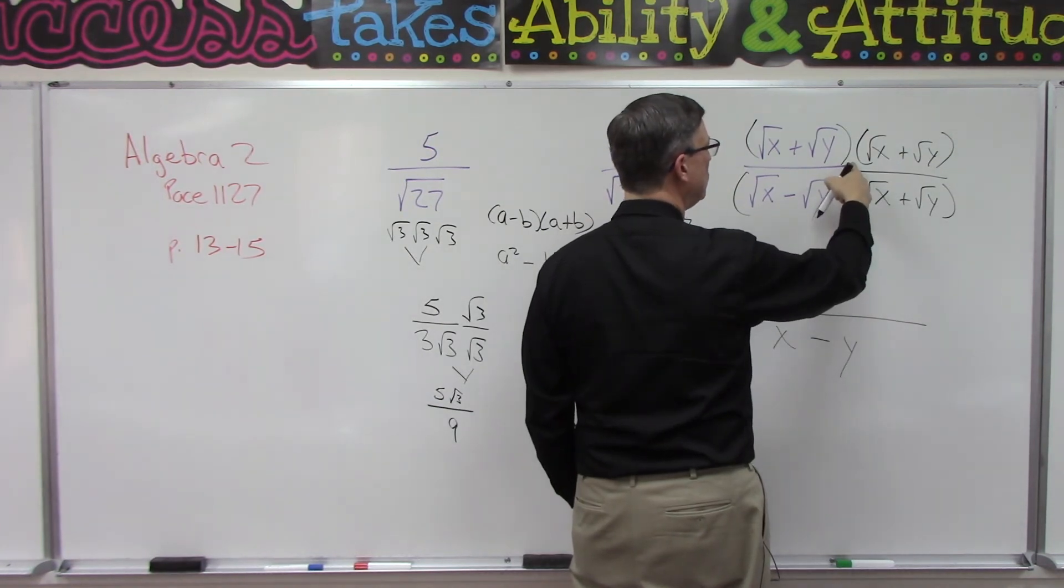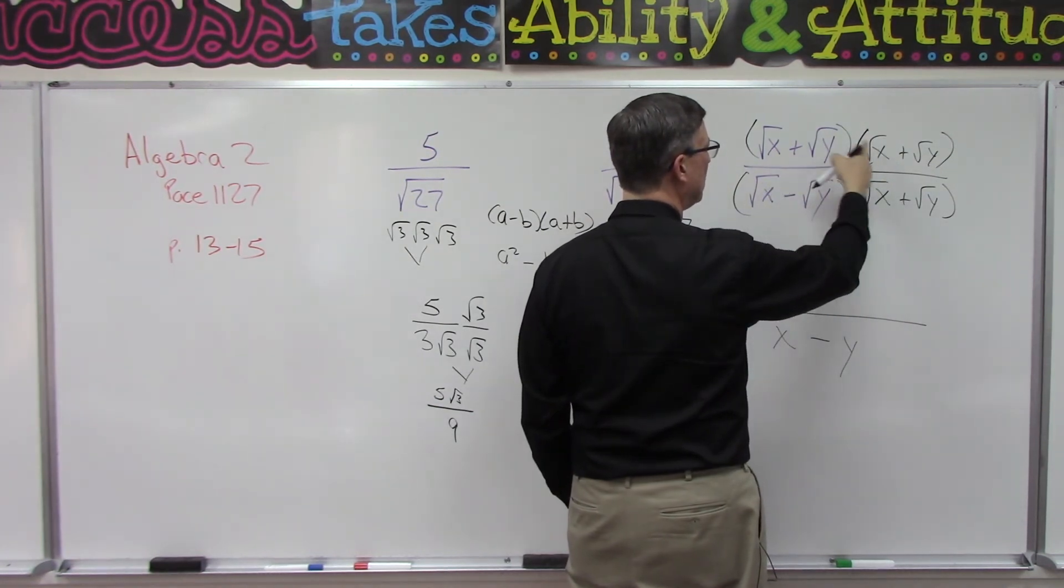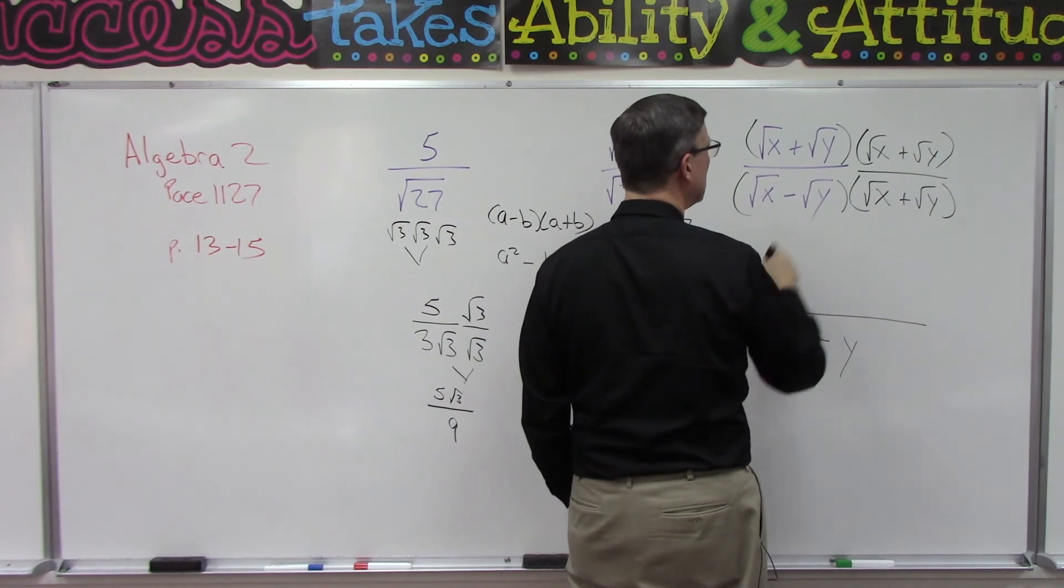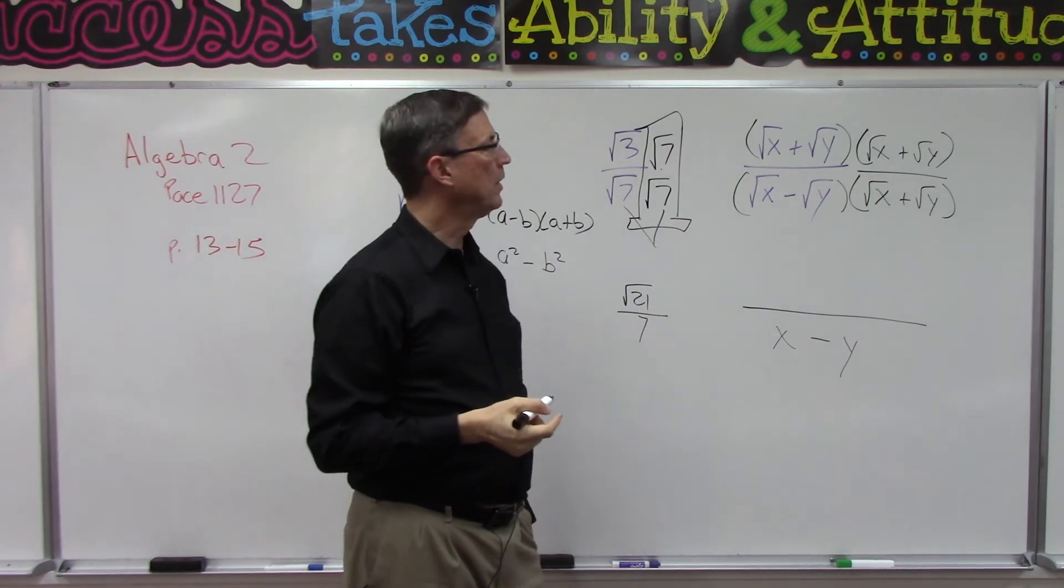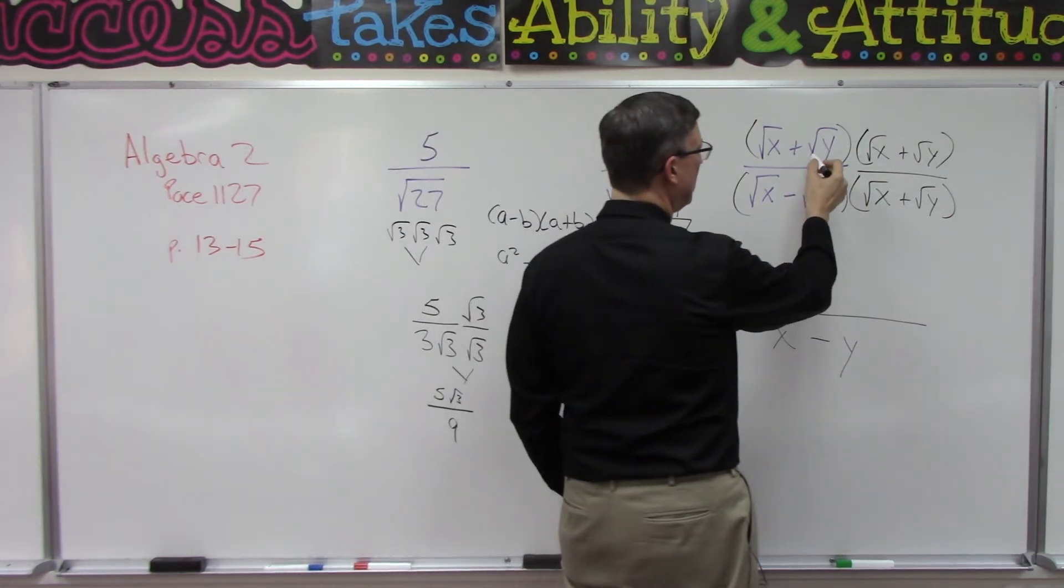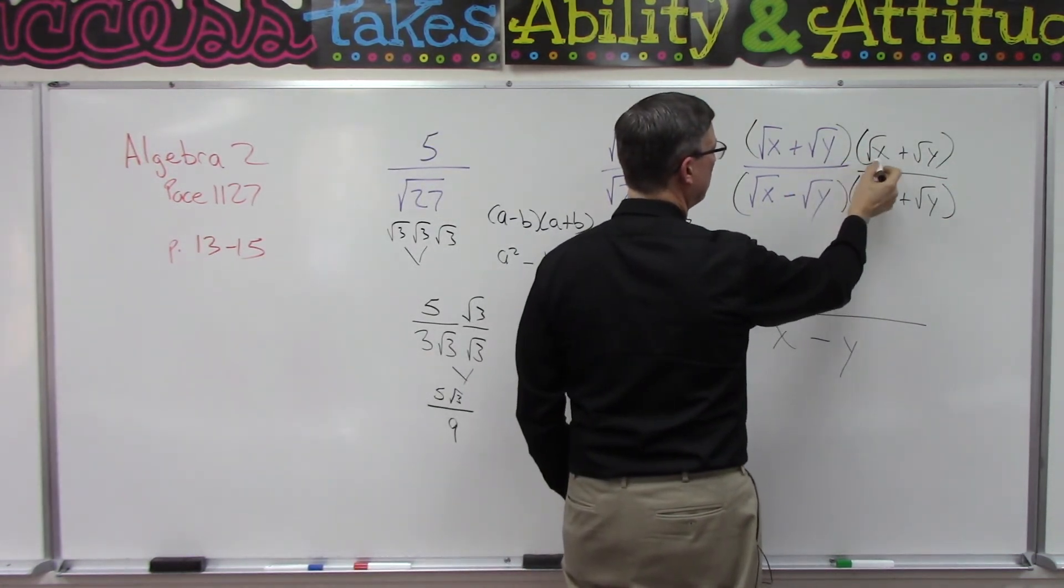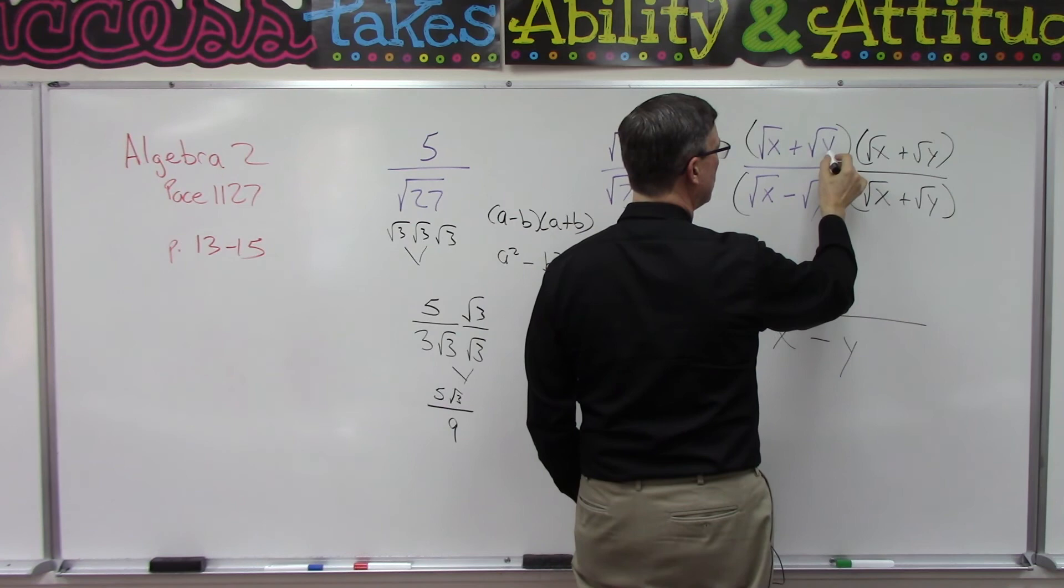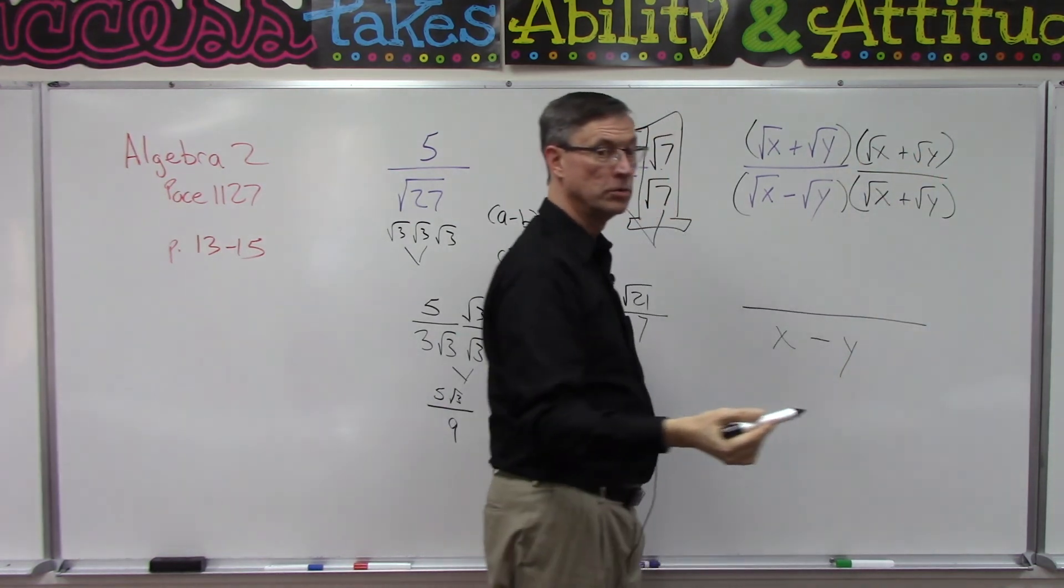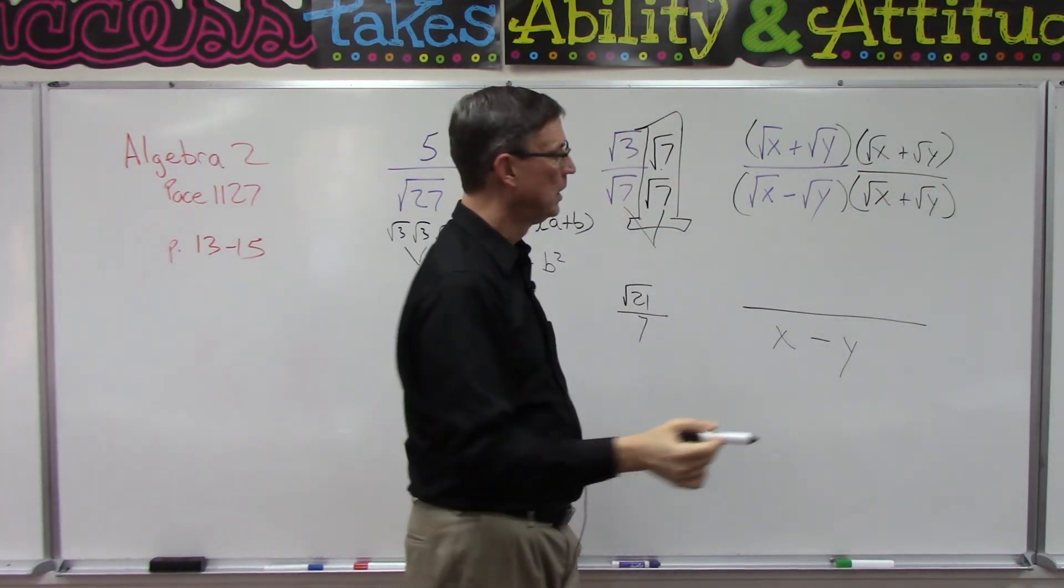Now I'm going to let you do the top here. You're going to do the FOIL method: you do the first times the first, and then you do the outer—that stays under the radical, square root of xy. Then we have another one for the inner, so another square root of xy; nothing pops out. Then your last term will be the square root of y times the square root of y, so then you'll see that the y should pop out.